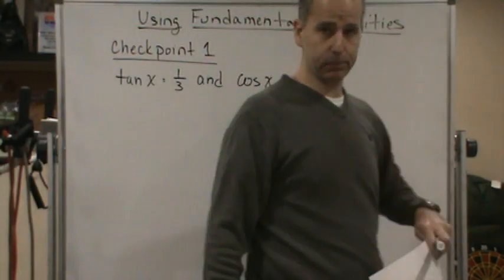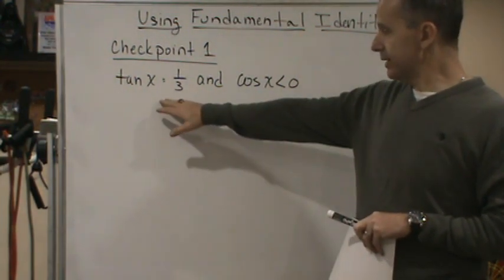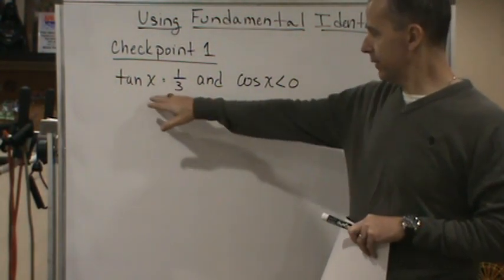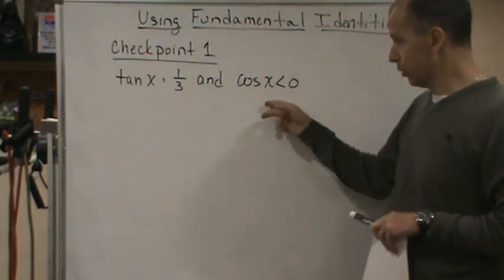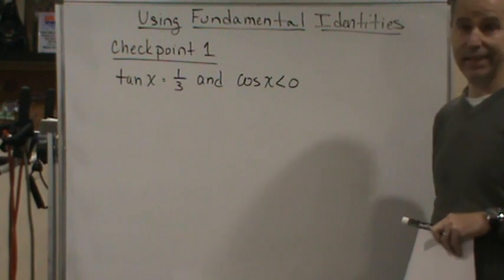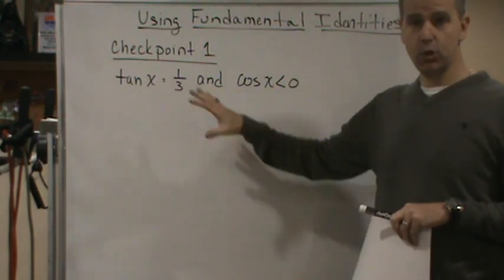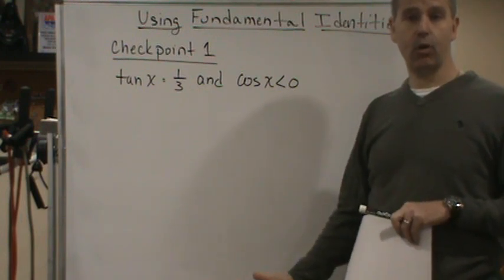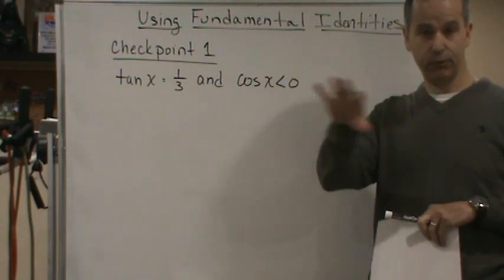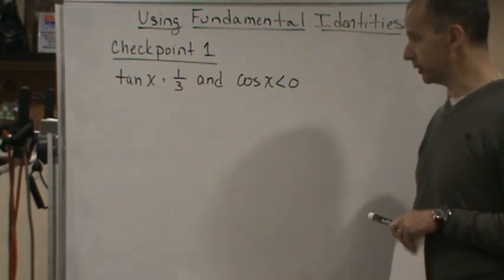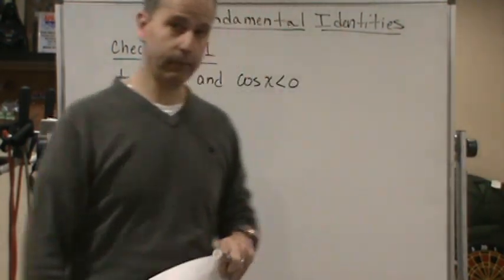All right, welcome back, and now we're going to do a checkpoint. So we're told that tangent x is one-third and we're told that cosine of x is negative. Use these two pieces of information to get all six of the trigonometric functions — the six basic functions. Then come back and see if you got the same answers I got. Go ahead and pause now and come back.